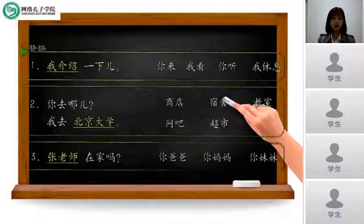And then look at the second one. 你去哪儿? 我去北京大学. So here 北京大学, we need to change it. So the first word 商店, it means store. Next one 宿舍, dormitory. And then 教室 means classroom. And the next one 网吧, a place we can surf the internet. And the next one 超市, supermarket.